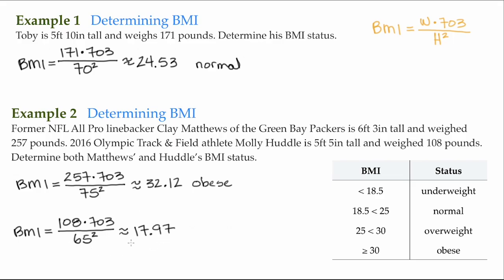Molly Huddle is at 17.97, so she would be considered underweight. Now, both Clay Matthews and Molly Huddle are elite athletes, at least during their prime. It's hard to think that Clay Matthews is obese - he was a very big and intimidating football player.